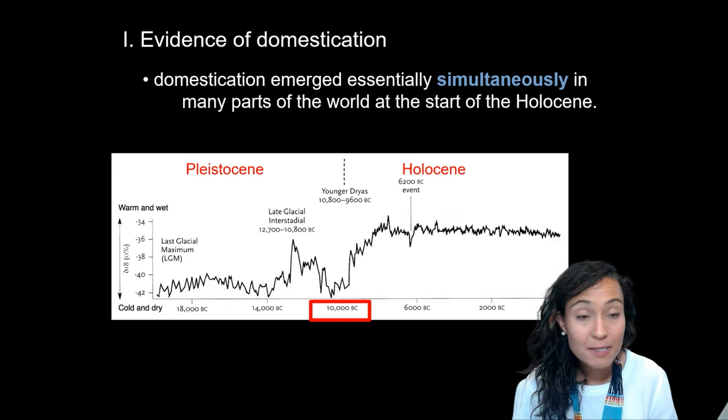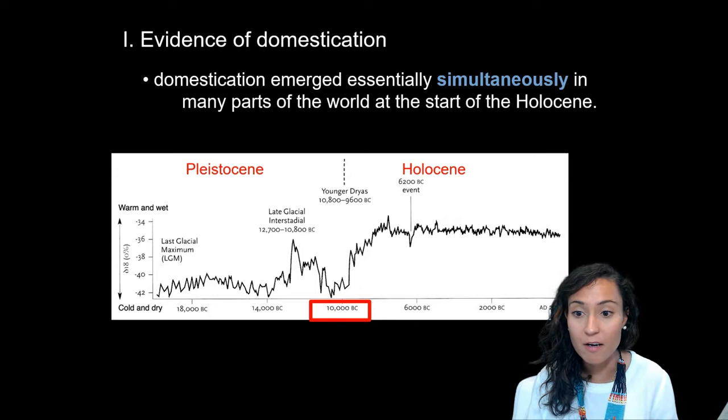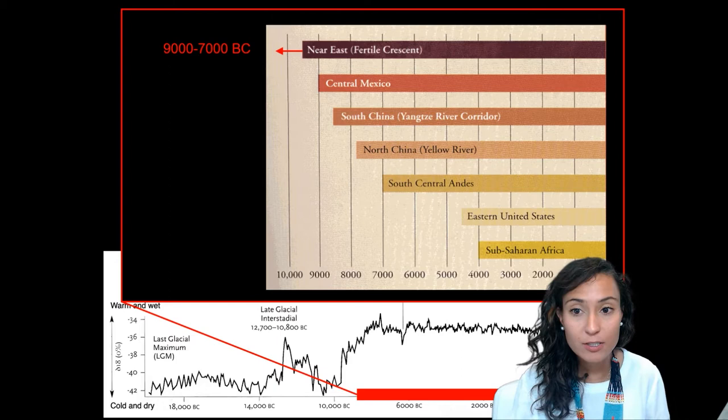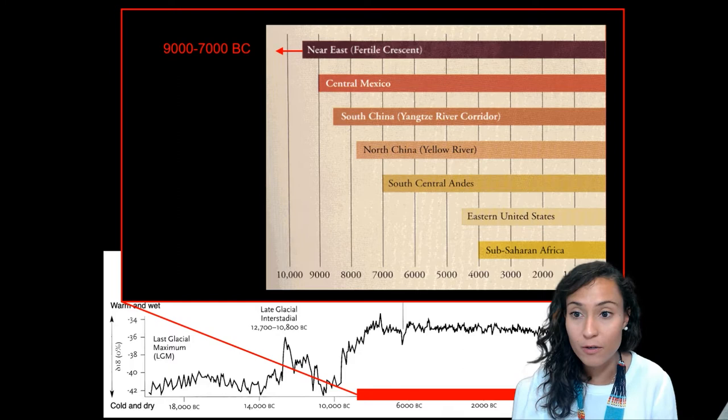In evolutionary time, domestication emerged essentially simultaneously in many parts of the world at the start of what's called the Holocene, roughly 10,000 B.C. As we talked about in Lecture 3.2, the earliest forms of agriculture come from the Near East and date to roughly between 9,000 and 7,000 B.C.